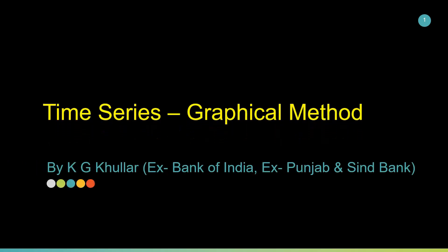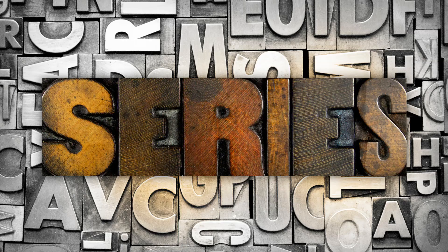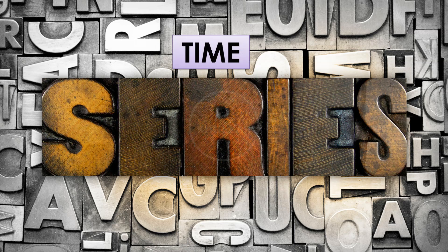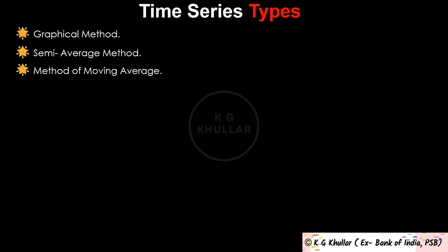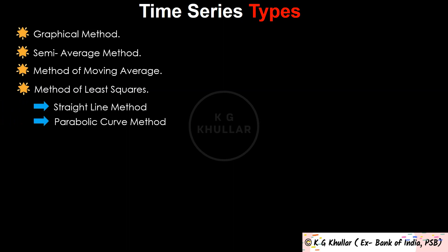Hello friends, welcome back to a new lecture. From this lecture we will look at some methods of measuring the trend of a time series. There are many methods, but we will study 4 methods: first is the graphical method, second is the semi-average method, third is the method of moving averages, and last is the method of least squares. Under least squares we have two types: the straight line method and the parabolic curve method.